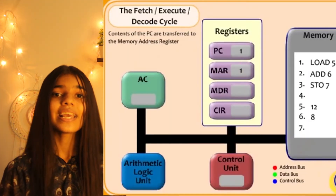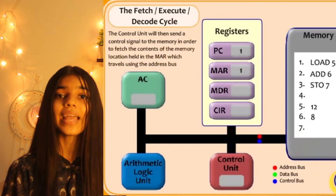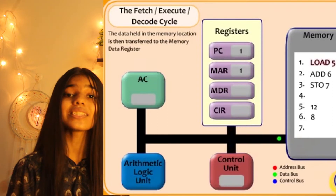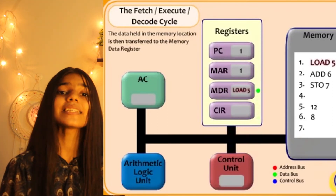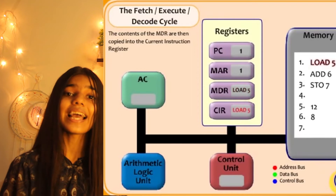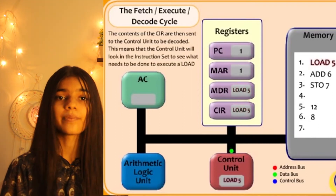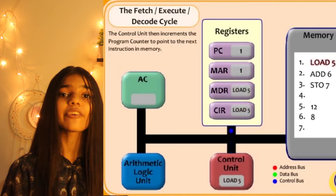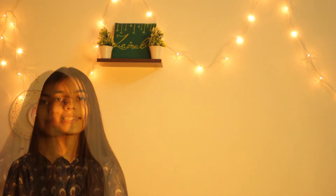In the Fetch-Decode-Execute Cycle, the next instruction is fetched from the memory address currently stored in the MAR, and the instruction is stored in the MDR. The contents of the MDR are then copied to the current instruction register. The PC is then increased by one so that the next instruction can be taken to be processed.